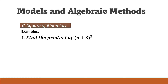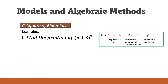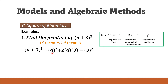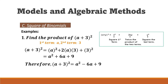Example one: find the product of (a + 3)². The first term is a and the second term is 3. We square the first term to get a², then 2 times a times 3 gives 6a, and the square of the last term is 9. So (a + 3)² = a² + 6a + 9.